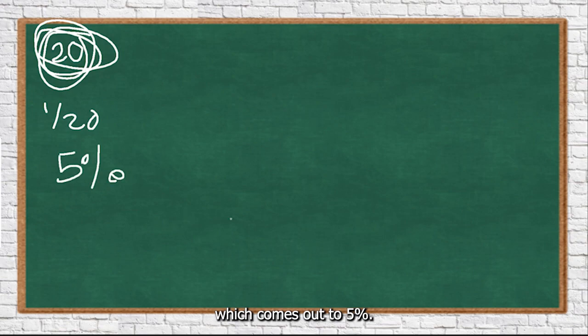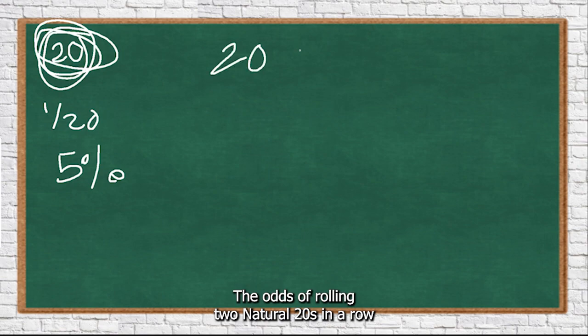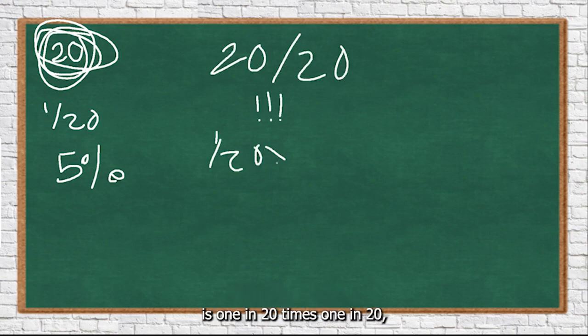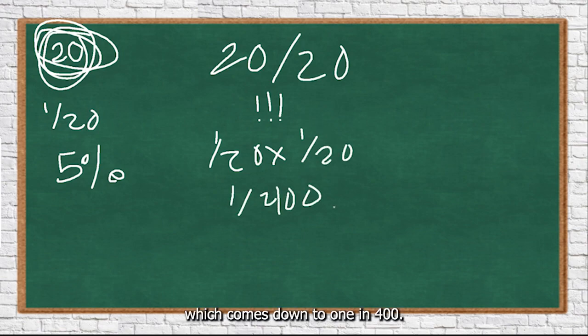Comes out to 5%. This is low, not super high. The odds of rolling two natural 20s in a row is 1 in 20 times 1 in 20, which comes down to 1 in 400.